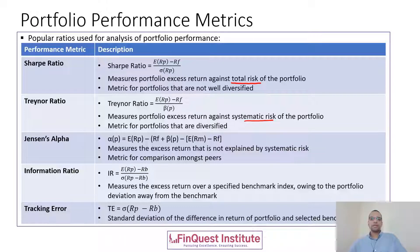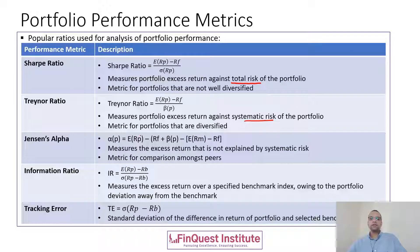Next is Jensen's alpha. Jensen's alpha is defined as the excess return that is not explained by systematic risk. It is given by: α = ERp minus what is expected from CAPM. So Jensen's alpha is the portion of return that remains after subtracting the CAPM-predicted return — the part unexplained by systematic risk.